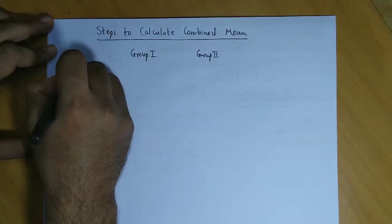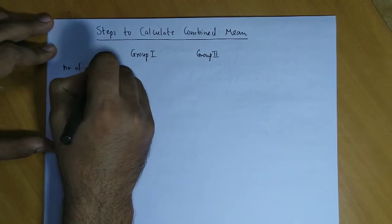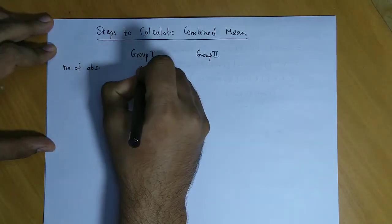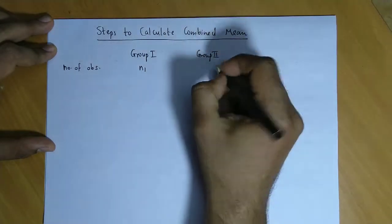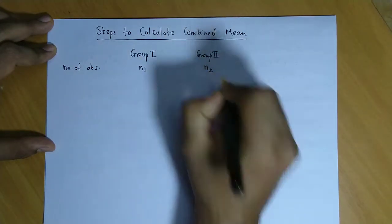Suppose the number of observations in the first group is n1, or the size of the first group is n1. The size of group two is n2.